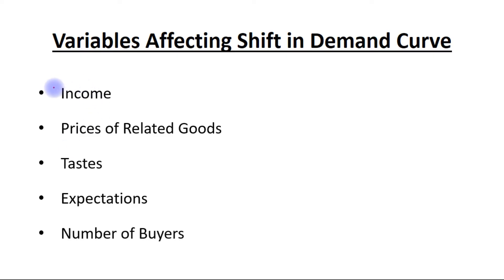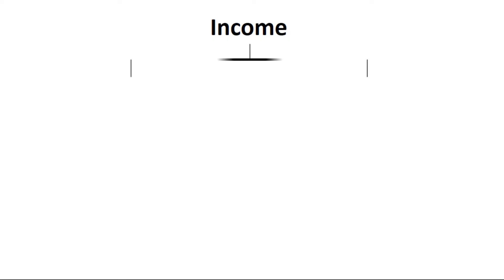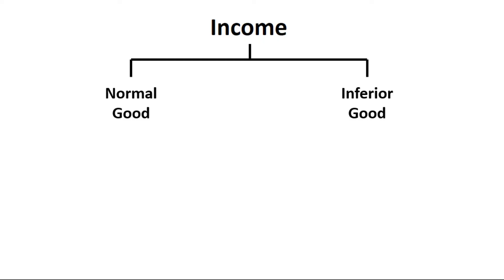Let's start with the first factor, which is income. In case of income, we read about two types of goods: normal good and inferior good. Suppose that income of the consumer increases — in that case, demand for normal good will increase, however demand for inferior good will be reduced.